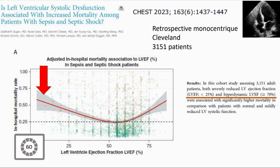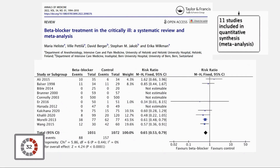If you decrease your heart rate, you decrease your cardiac output. In some patients you may have an adverse effect: a decrease of mean arterial pressure and tissue hypoxemia. That's why it's really, really important to assess the hemodynamics when you give landiolol or any beta-blocker to the patient in septic shock, to avoid any adverse effect.